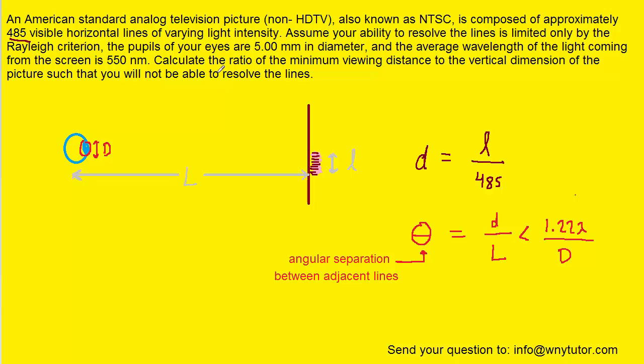Now why don't we turn back to the question so that we understand what it's asking. It asks calculate the ratio of the minimum viewing distance which is uppercase L to the vertical dimension of the picture. Remember the vertical dimension of the picture was lowercase l. So in essence this question is asking us to solve for uppercase L divided by lowercase l, and we're going to be able to do that with the information that we have over here.